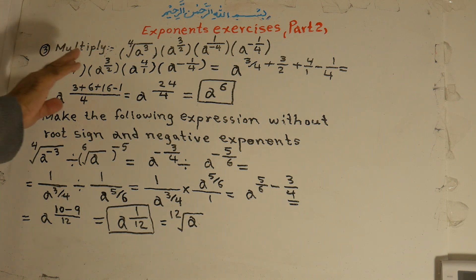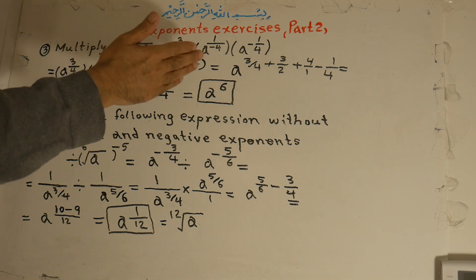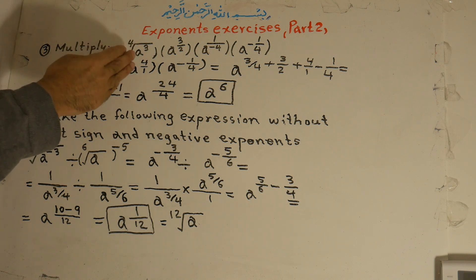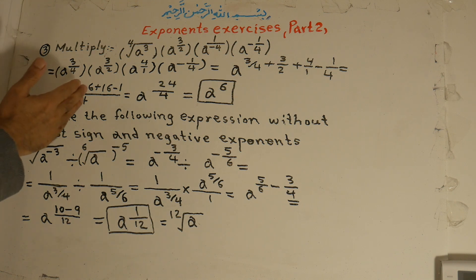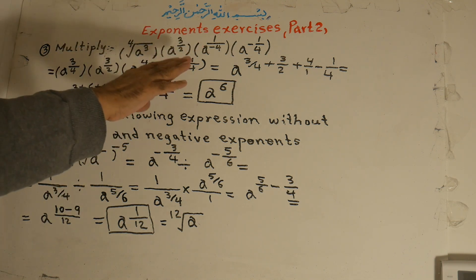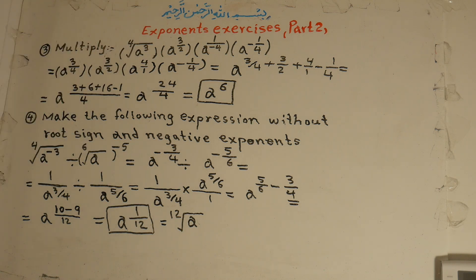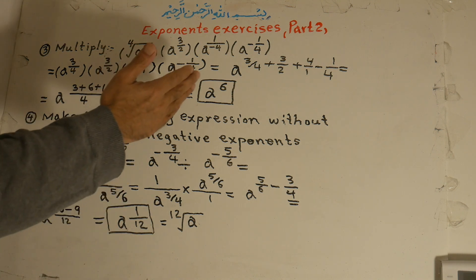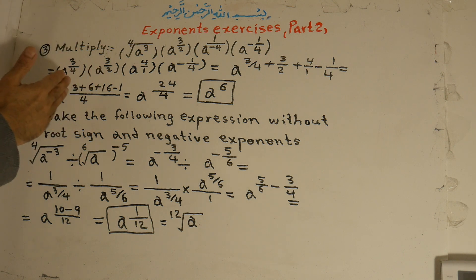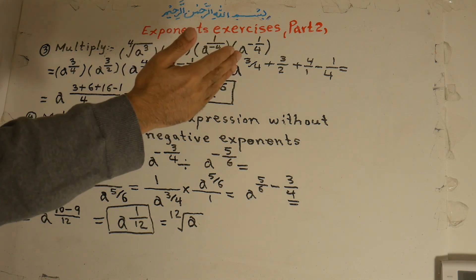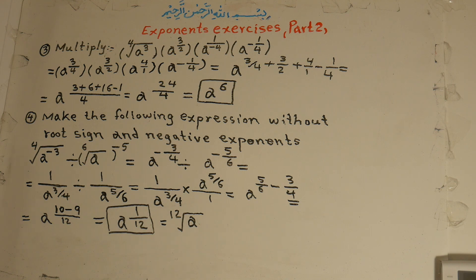Let me repeat. Exponents exercises part 2. Multiply: a to the power of 3 under the 4th root, times a to the power of 3 over 2, times a to the power of 1 over negative 4, times a to the power of minus 1 over 4. The first one becomes a to the power of 3 over 4, with the root coming to the denominator. Times a to the power of 3 over 2. The negative sign becomes positive and goes to the numerator: 4 over 1, it becomes inverse. And a to the power of minus 1 over 4.